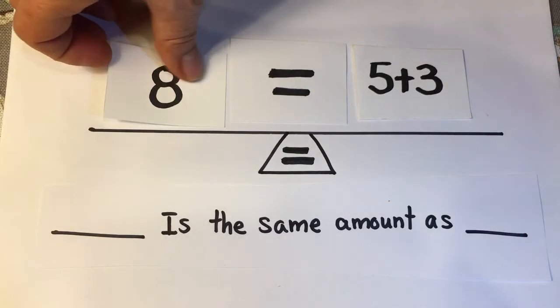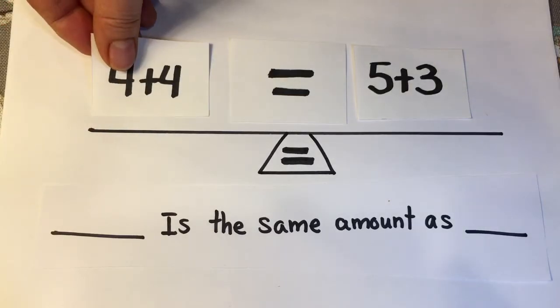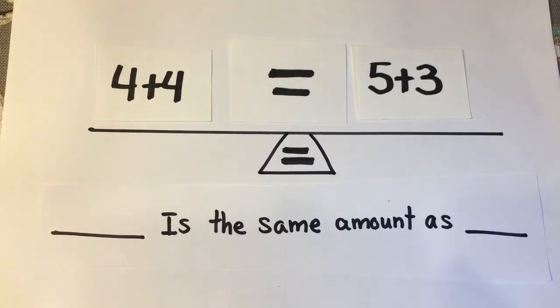We could also put an equation on both sides. 4 plus 4 is the same amount as 5 plus 3. As long as the equations or the numbers represented on each side of the equal sign are the same amount or the same quantity, then they are equal.